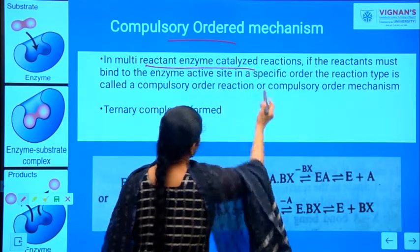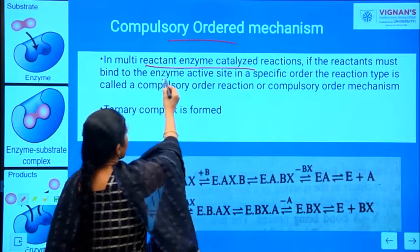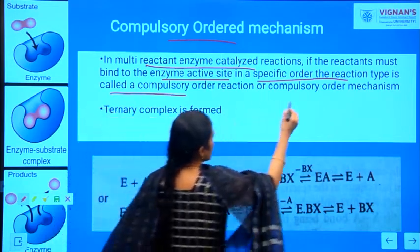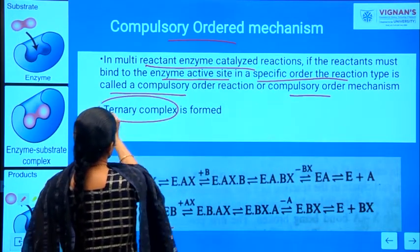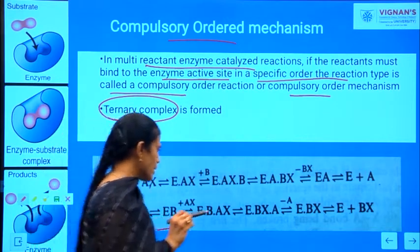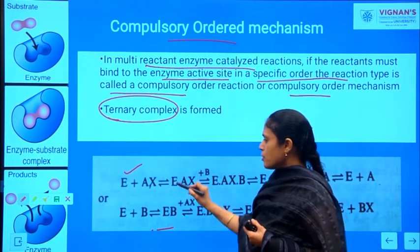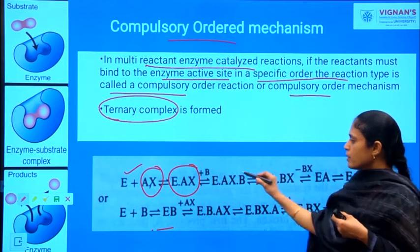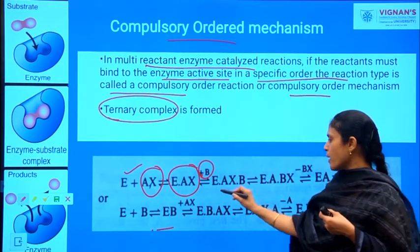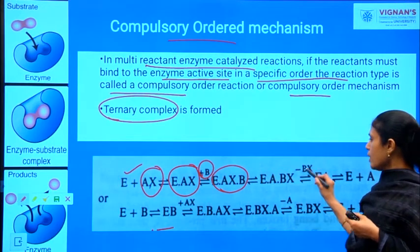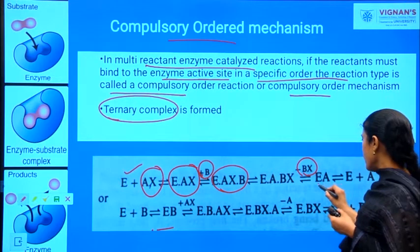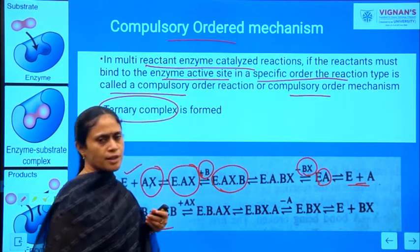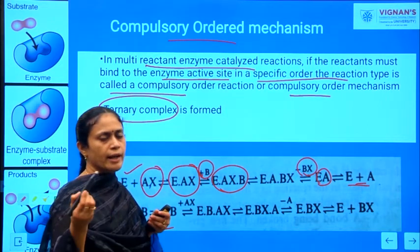In multiple reactant mechanism catalyzed reactions, if the reactants must bind to the enzyme's active site in a specific order, the reaction type is called a compulsory ordered reaction or compulsory ordered mechanism, and there is a formation of a ternary complex. You can see the example: the enzyme is present, a first substrate molecule binds forming a binary complex, then another substrate B binds to the binary complex to form a ternary complex. Then the second product is released, giving again a binary complex, and finally the initial substrate is released as product and the enzyme is regained.